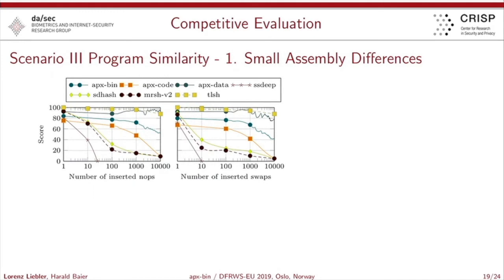In the scenario where we insert an increasing number of NOPs or increasingly swap specific instructions inside the binary, TLSH is really in its domain. In the case of randomization attacks, TLSH's histogram-based comparison performs very solid and clearly outperforms every other approach. SSDeep tends to fail in some scenarios even after just 10 insertions. APXPIN, additionally split into APX code and APX data, performs quite solid even across 1,000 insertions or 1,000 instruction swaps.